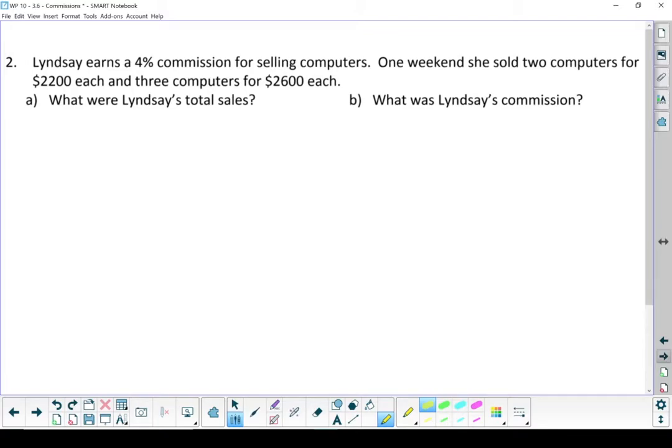Our second example. Lindsay earns a 4% commission selling computers. One weekend, she sold two computers for $2,200 each and three computers for $2,600 each. A. What were Lindsay's total sales? And B. What was Lindsay's commission? Let's start with what we know.